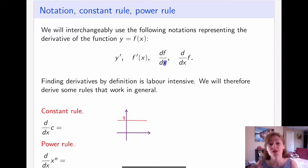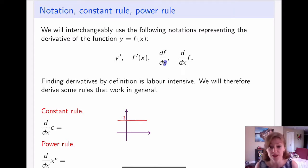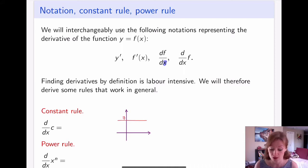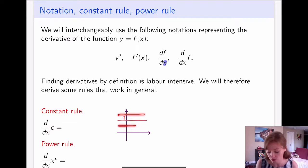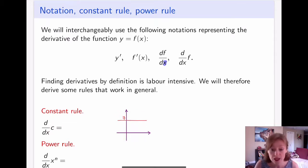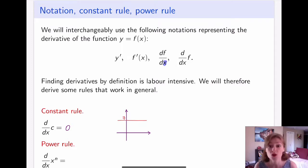Graphically, the derivative is the slope of a tangent line to our graph. Here, it doesn't matter what point x I pick — the tangent line is the line itself, and the derivative is the slope of that line, which in this case is 0. Since it doesn't matter what c is — whether c is 8 or 6 or whatever — it's always a horizontal line. The slope of a horizontal line will always be 0, so the derivative of a constant is always 0.